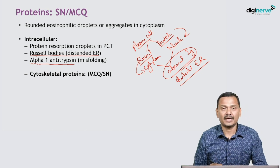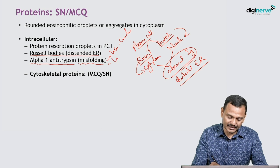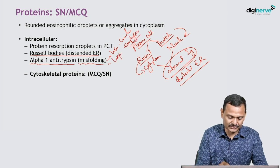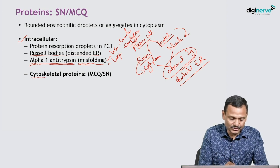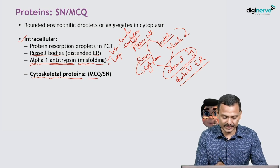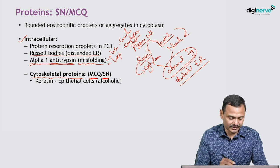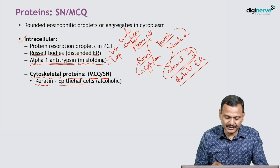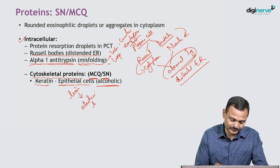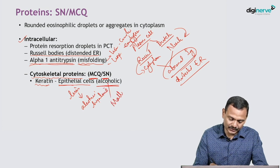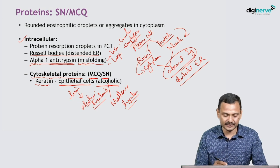Alpha-1 antitrypsin deposits are due to misfolding of proteins and can result in liver cirrhosis and, in the lungs, emphysema. Additionally, there are cytoskeletal proteins as intracellular deposits. There are five subtypes: keratin, deposited in epithelial cells of the liver in alcoholics — called alcoholic hyaline or Mallory hyaline.